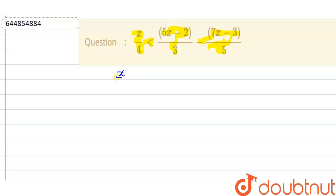This is x/4 less than... What I'm going to do is take the LCM of this. The LCM will be 15, and this will be multiplied with 5, so this becomes 25x - 10. And this is 21x.